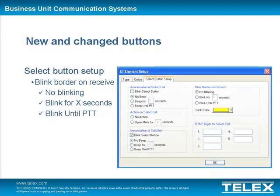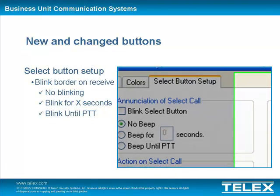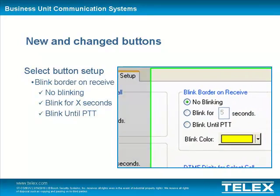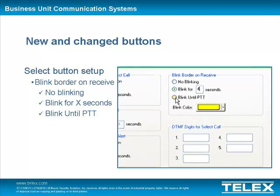On the Select Button Setup Property page, the Blink Border on Receive group was added. This group box contains the settings used to control blinking the select button's border while the console is receiving on that line. The three options for border blinking are: one, no blinking; two, blink for X number of seconds; or three, blink until PTT.